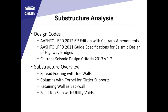Moving into the substructure analysis. The design code was AASHTO 2012, and we also used the AASHTO LRFD 2011 Guide Specification and Caltrans Seismic Design Criteria version 1.7. An overview of the substructure: spread footings with toe walls, columns with the corbel for girder supports, retaining wall for the back wall, and then the solid top slab with the exception of utility voids.